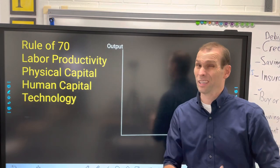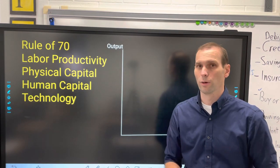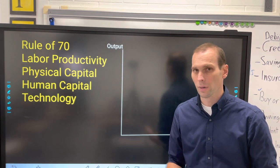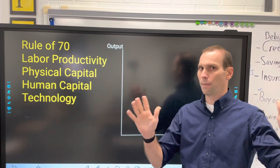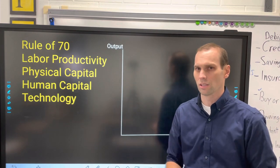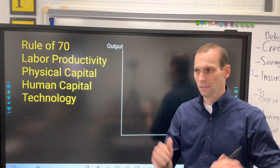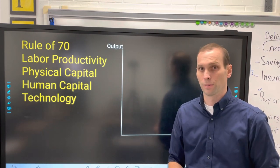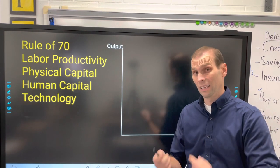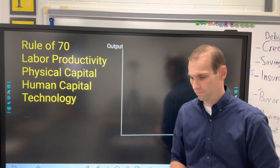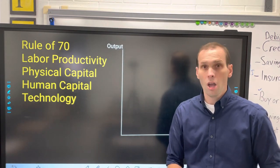This also works for investing. If you're investing your money and you get 35% interest on an investment, it would take two years for that money to double.